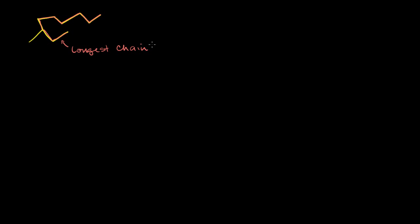The longest chain has 9 carbons. You can view this as the backbone of our molecule, and also the backbone of our naming. 9 carbons, so we're dealing with a nonane — 'non' for 9, and 'ane' because we're dealing with an alkane. We have all single bonds.